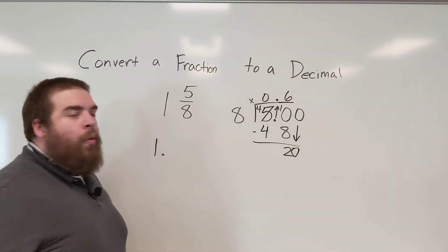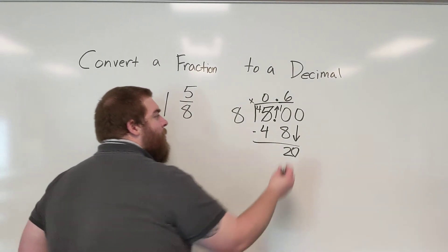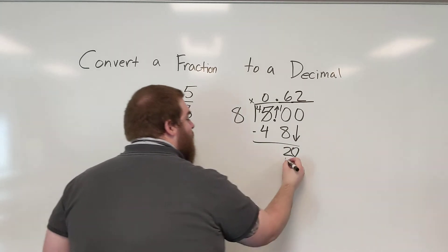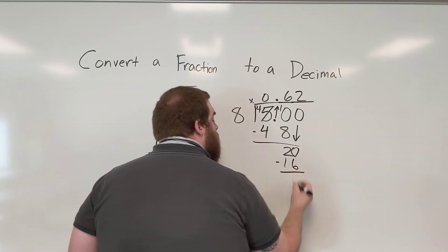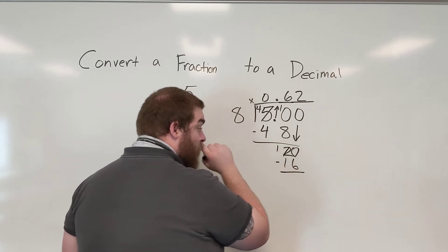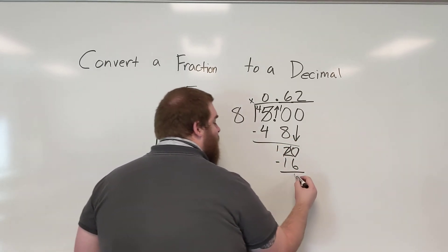How many times does 8 go into 20? 8 goes into 20, 8, 16, 2 times. 2 times 8 is 16. 20 minus 16 now. 0 minus 6, I can't do it. Borrow from the 2, make it a 1, turn the 0 into a 10. 10 minus 6 is 4.